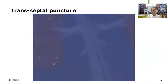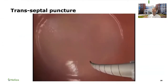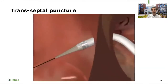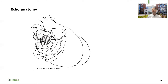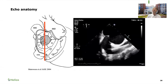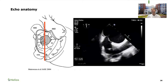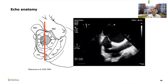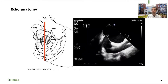The first step of the procedure is the transseptal puncture. We do a transvenous approach through the femoral vein, come up, and cross the septum. The septum is divided into superior, inferior, anterior, and posterior portions. In the bicaval view, what we see to the right is superior and to the left is inferior. Here we have a needle trying to pop the fossa ovalis in its inferior portion.